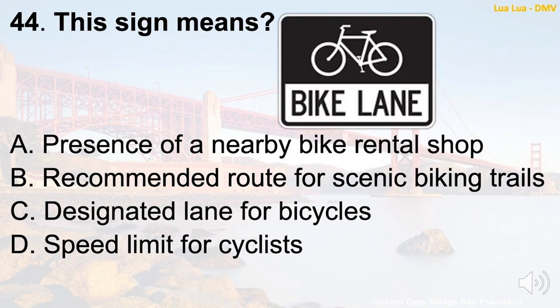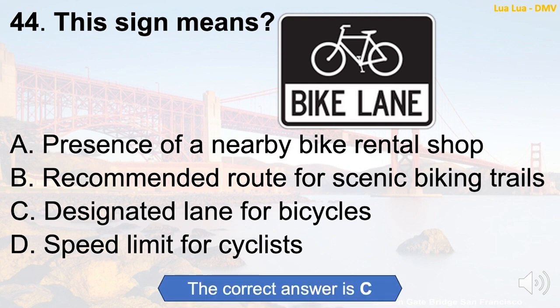Question 44: This sign means — A. Presence of a nearby bike rental shop. B. Recommended route for scenic biking trails. C. Designated lane for bicycles. D. Speed limit for cyclists. The correct answer is C: Designated lane for bicycles.